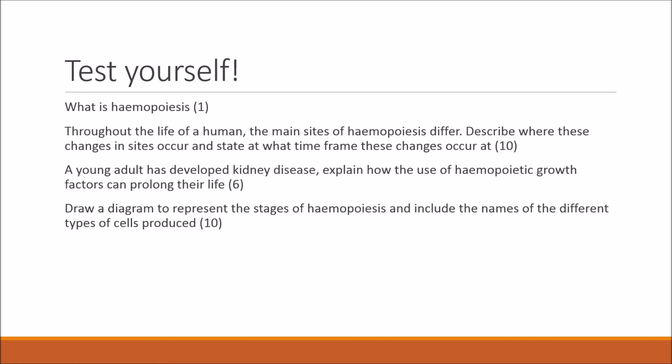Now for the test section. This has been a short presentation covering the basics of haemopoiesis. Four questions: for one mark — what is haemopoiesis? For ten marks — throughout the life of a human the main sites of haemopoiesis differ; describe where these changes occur and at what time frames. For six marks — a young adult has developed kidney disease; explain how haemopoietic growth factors can prolong their life. For ten marks — draw a diagram representing the stages of haemopoiesis and include the names of the different cell types produced. Good luck revising and I hope you get the grades you want!